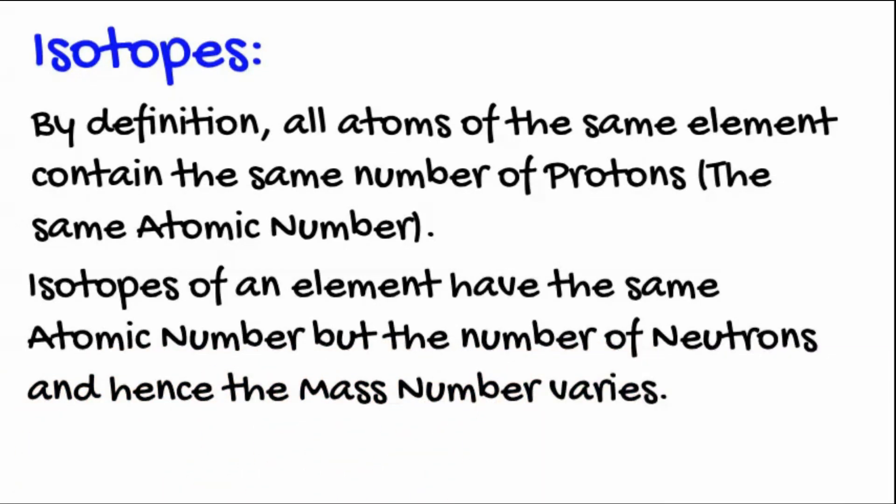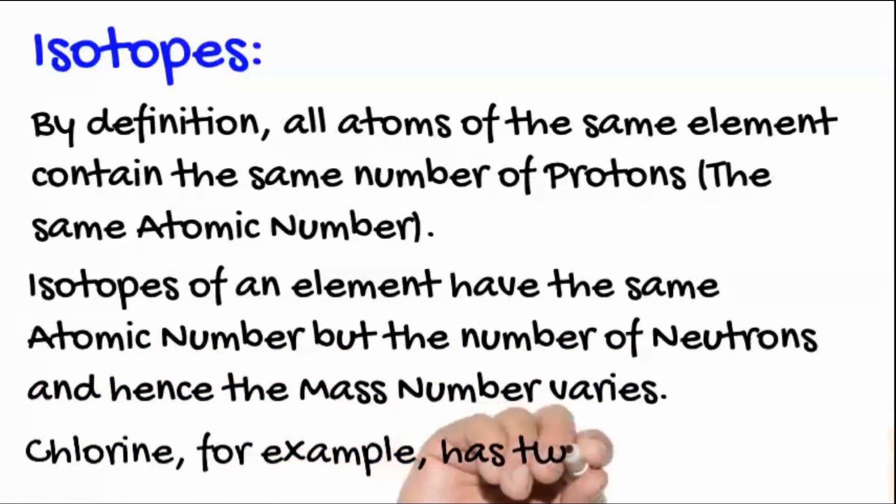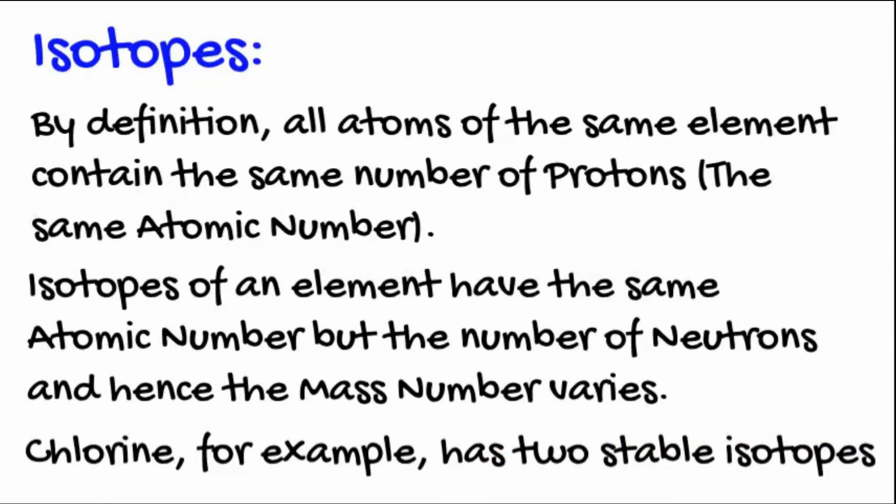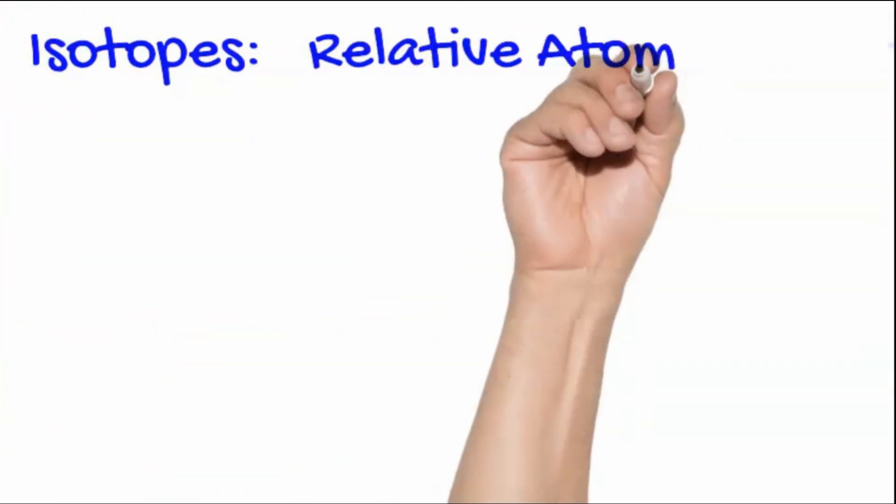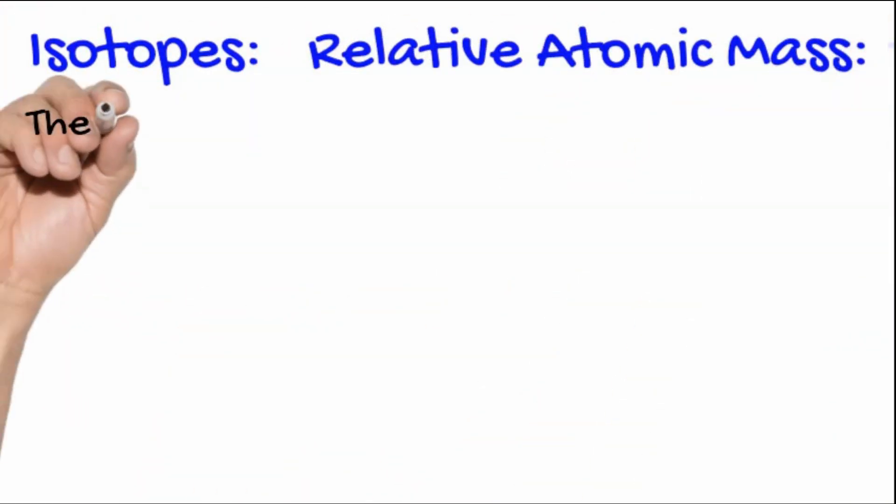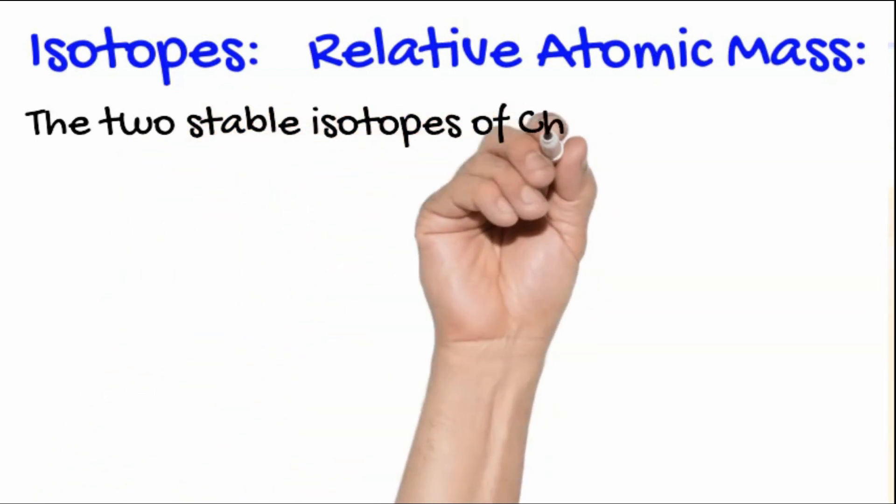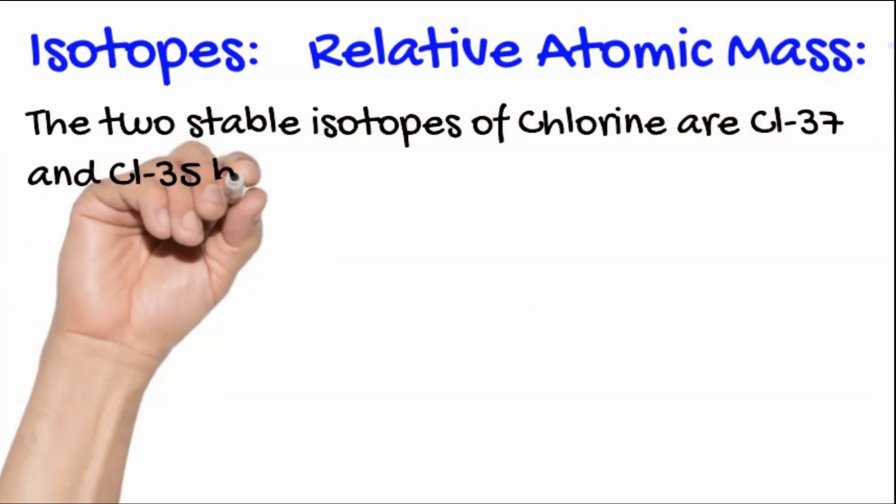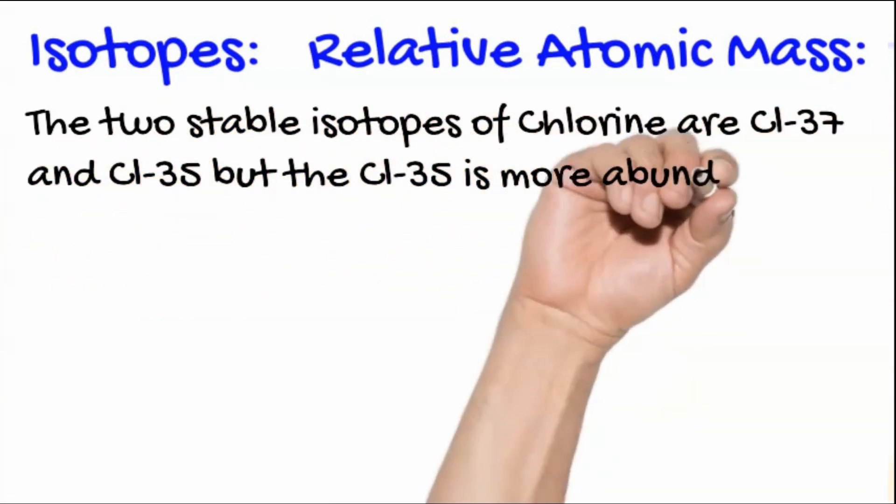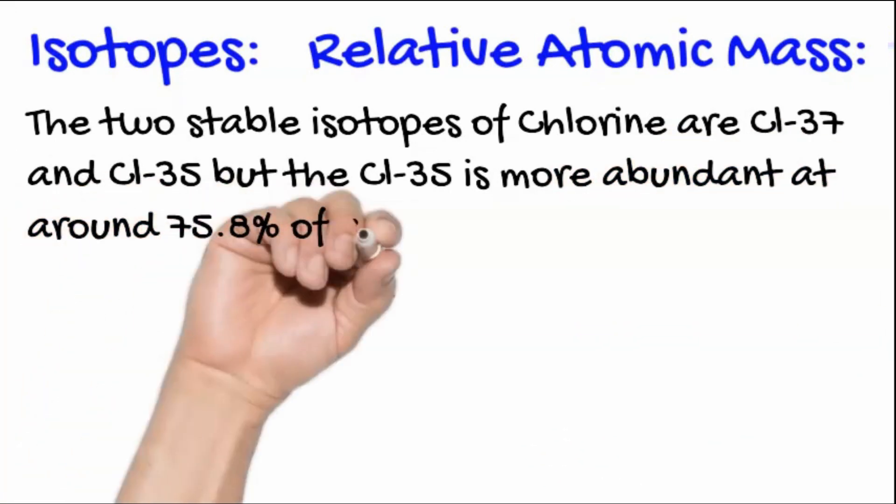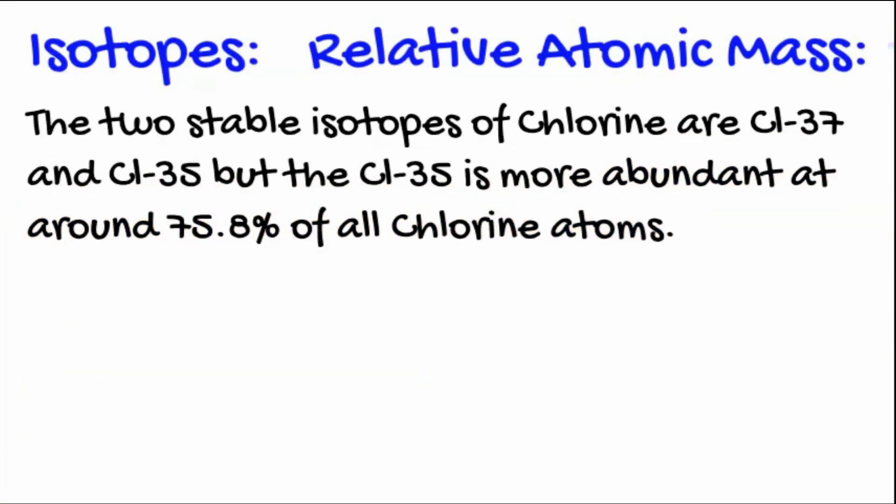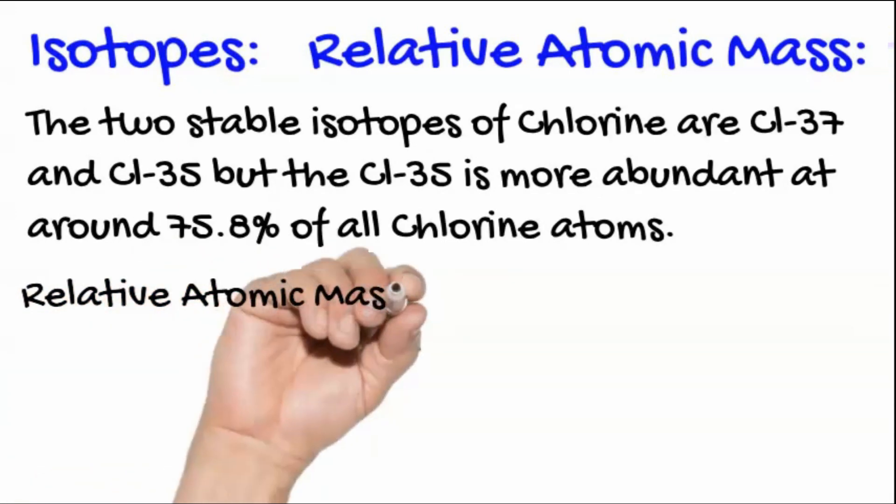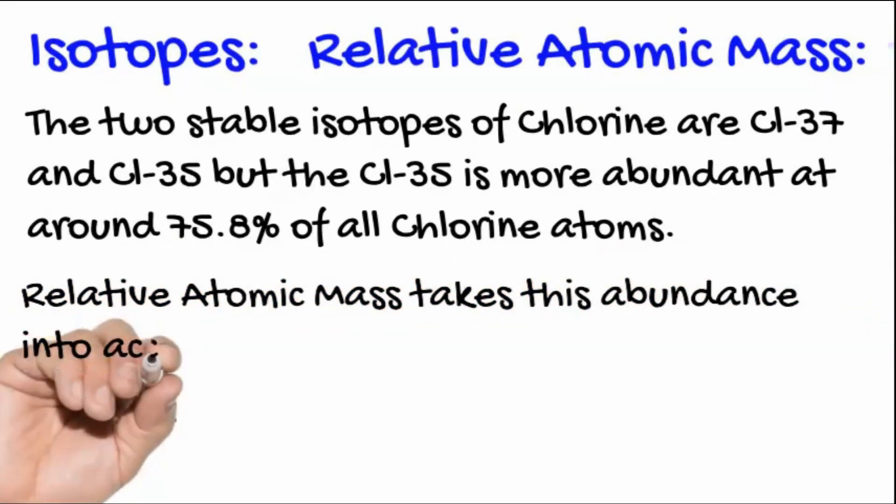Chlorine, for example, has two stable isotopes. The two stable isotopes of chlorine have mass numbers of 37 and 35, but the chlorine-35 is much more abundant, at around 75.8% of all chlorine atoms.